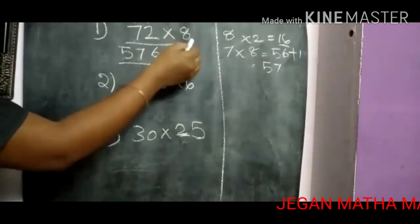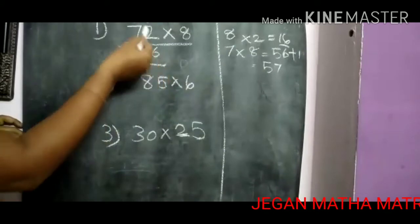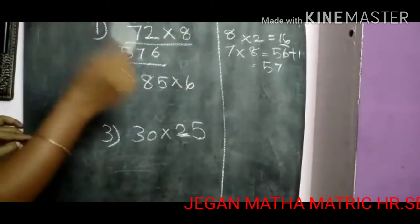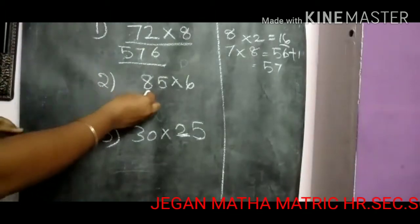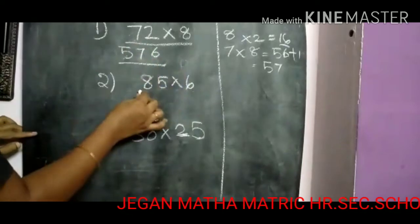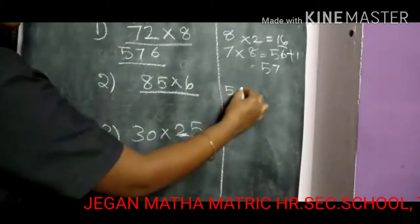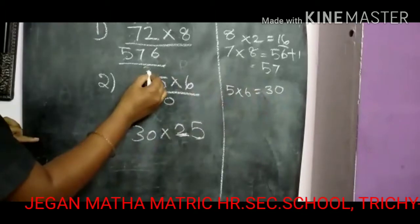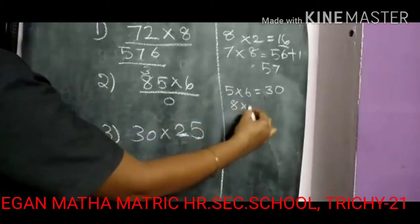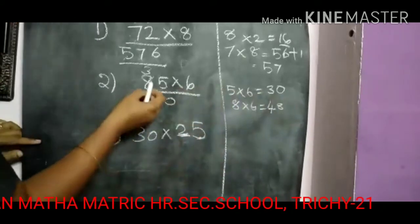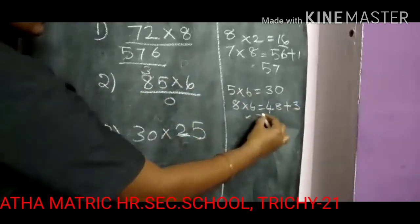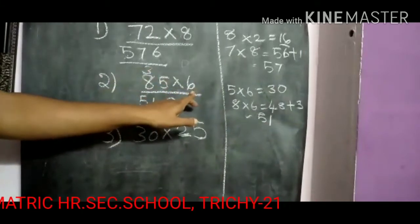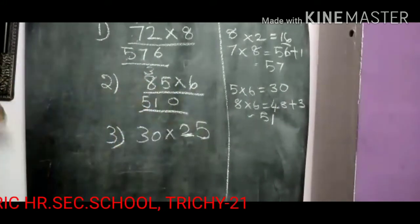Ok, now see the second sum: 85 multiple with 6. Same method — first 1's place number. 5 6's are 30, so write 0, balance 3, carry over to 10's place. Then 8 6's are 48. Already you have 3, so plus 3, total is 51. So 85 multiple with 6, answer is 510.